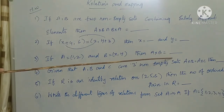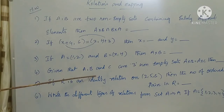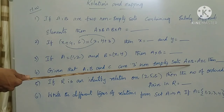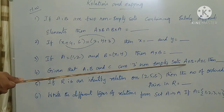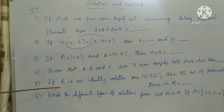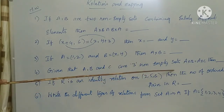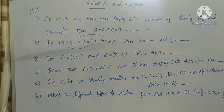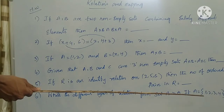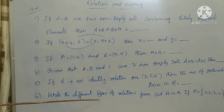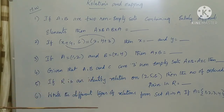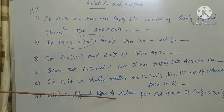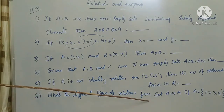Fourth question: given that A, B, and C are three non-empty sets, and A cross B equals A cross C, what is the relation between A, B, and C? Fifth question: if R is an identity relation on {2, 5, 6}, how many ordered pairs are in relation R? Sixth question: write all different types of relations from set A to A, where A equals {1, 2, 3, 4}, including universal, identity, reflexive, symmetric, transitive, anti-symmetric, and equivalence relations, with all possible ordered pairs.